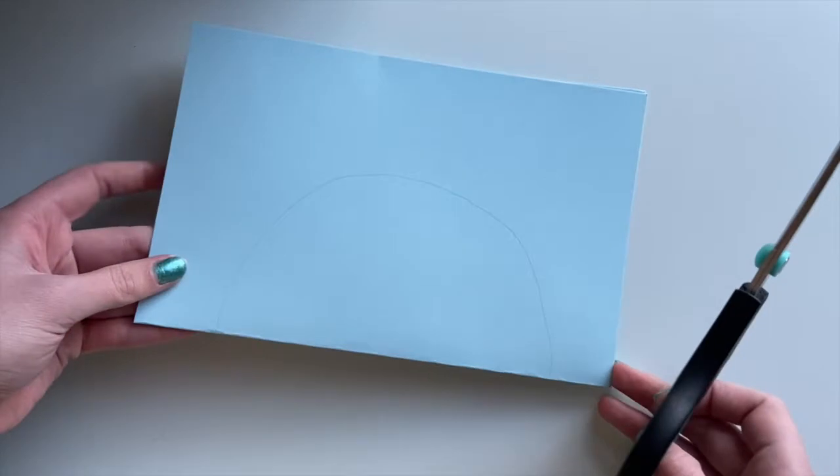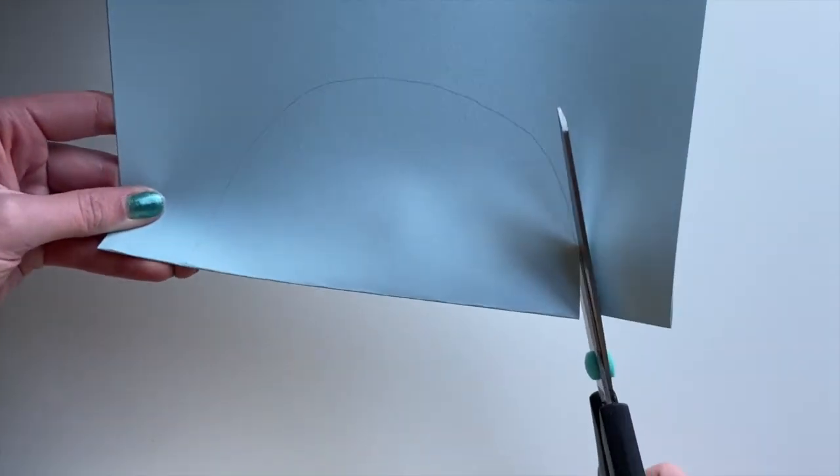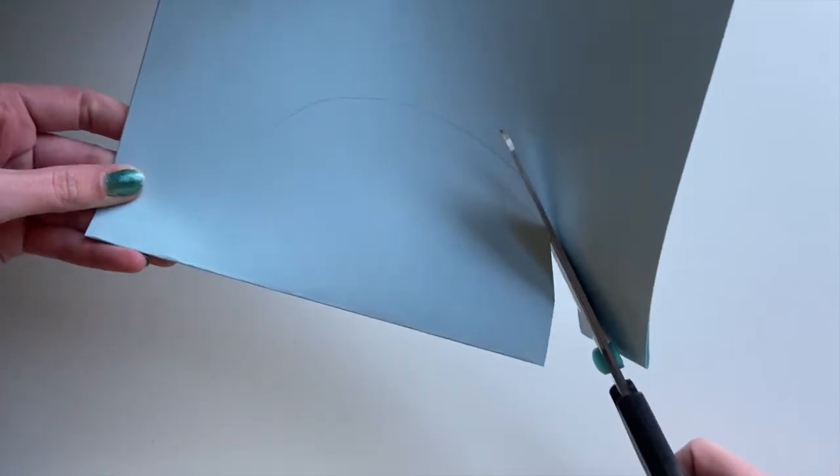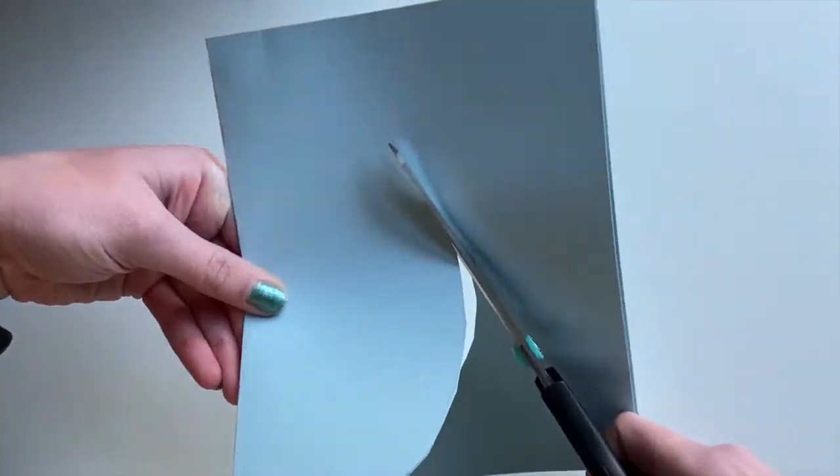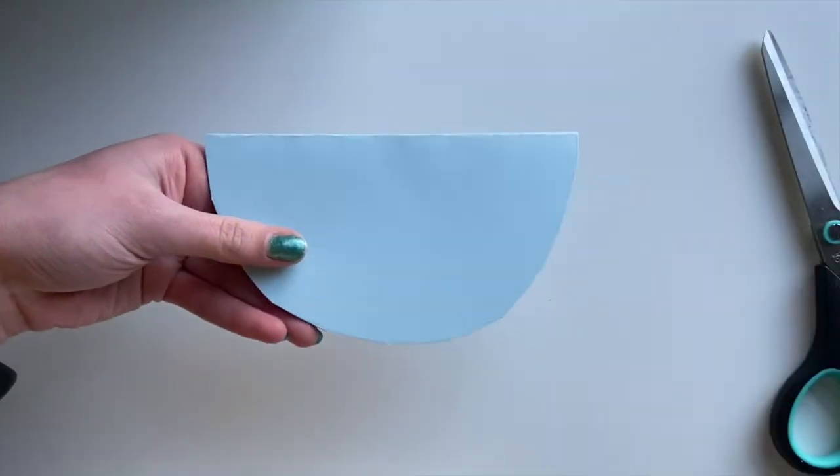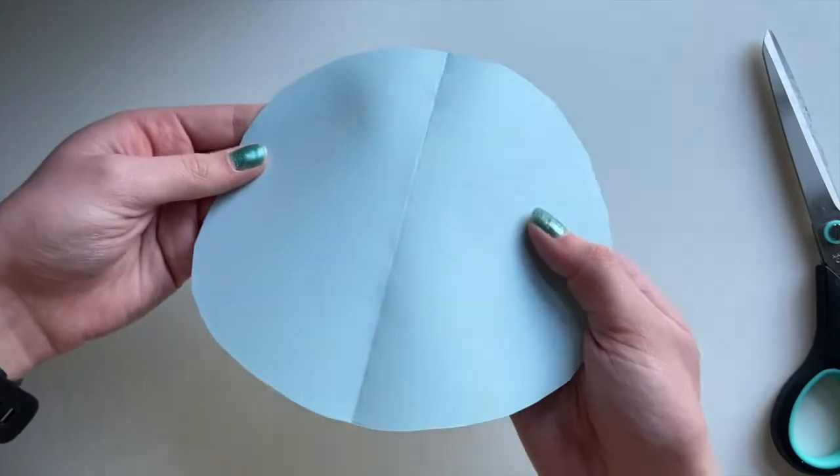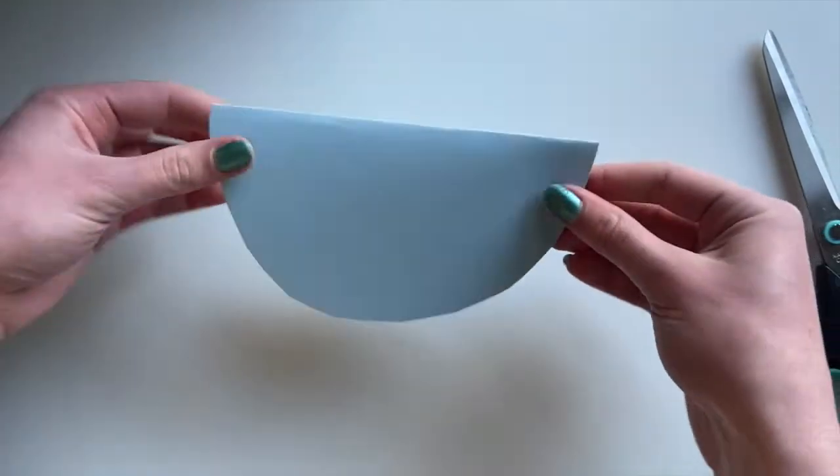Next you're going to take a pair of scissors and cut out the semicircle that you just drew. Make sure that your paper is still folded in half. When you finish cutting out your semicircle, unfold and you'll see that you have a full circle. This is going to be the water for our boat.